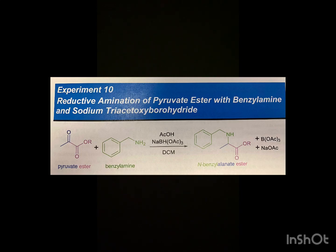Hello, my name is Chris Durrigans, and in today's experiment we will be taking either methyl or ethyl pyruvate and converting it into an amine through reductive amination using benzyl amine as a nitrogen source and sodium triacetoxyborohydride as a hydride source.